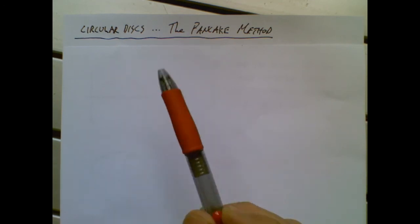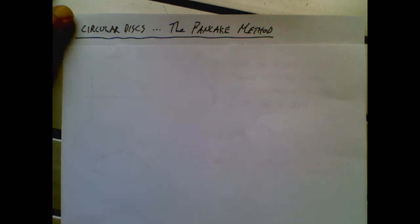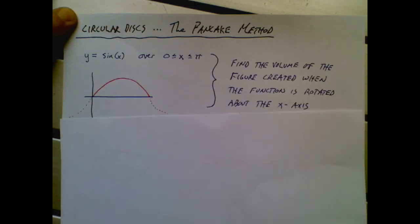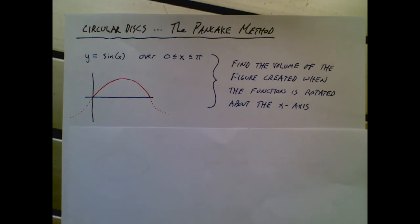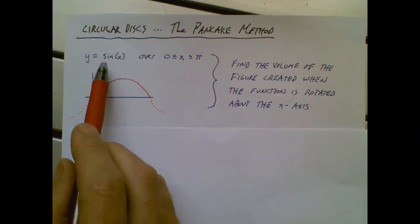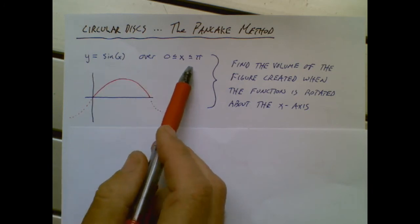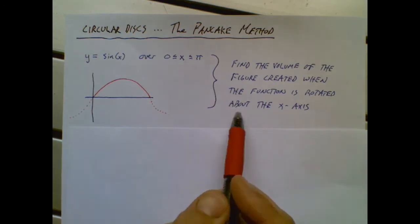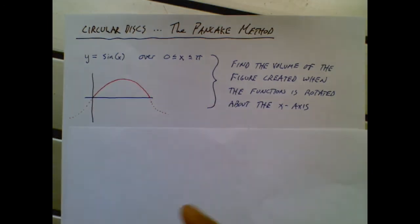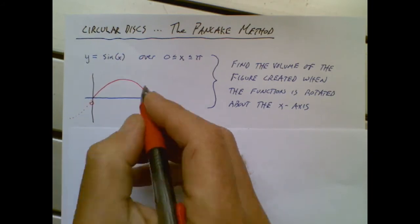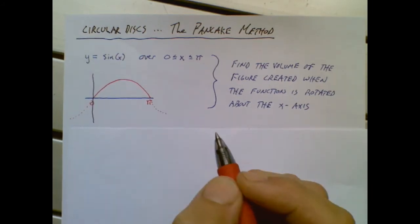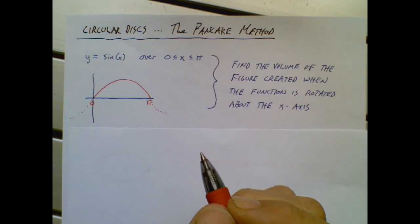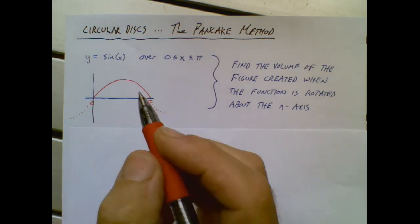You'll see why this is happening as we go through this. So it's going to be a weird concept. You're going to have to open up your imagination. I'm going to take a fairly cooperative function y equals sine of x over zero to pi. So even though sine of x goes forever and ever up and down, we're just using this section from zero to pi.